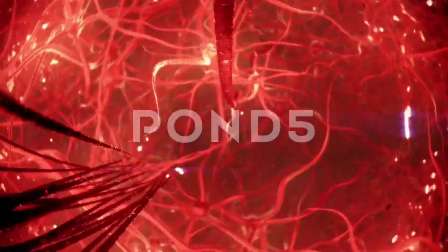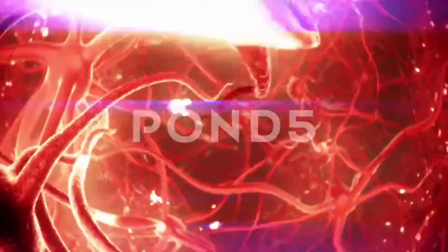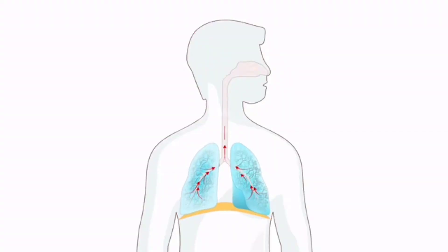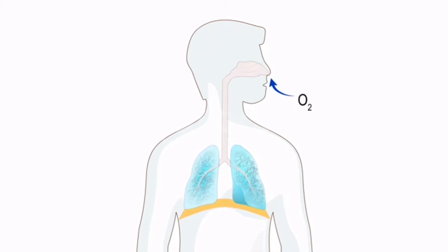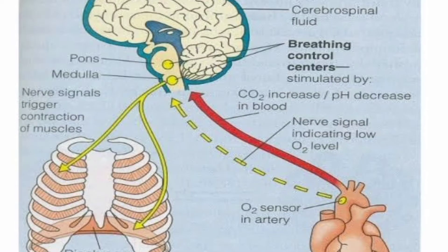Neural signals from this center can reduce the duration of inspiration and thereby alter the respiratory rate. A chemosensitive area is situated adjacent to the rhythm center, which is highly sensitive to carbon dioxide and hydrogen ions. Increase in these substances can activate this center, which in turn can signal the rhythm center to make necessary adjustments in the respiratory process.